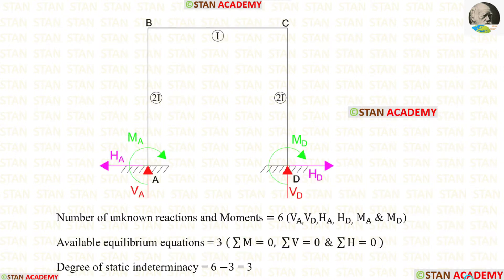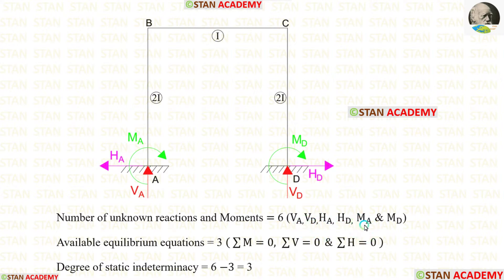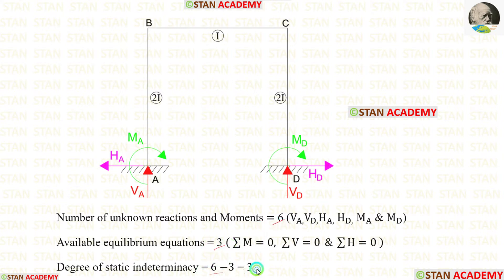Now let us find the degree of static indeterminacy. In this frame, the number of unknown reactions and moments are 6: the vertical reactions VA and VD, the horizontal reactions HA and HD, and the moments MA and MD. The available equilibrium equations are 3. So the degree of static indeterminacy is 6 minus 3, which equals 3.